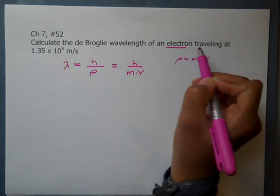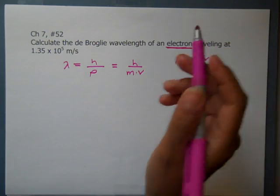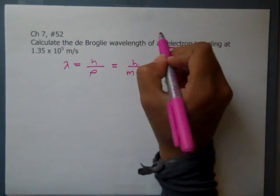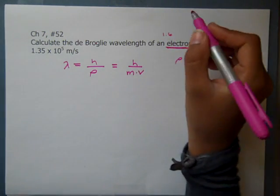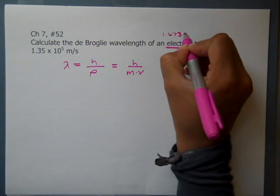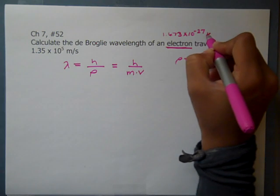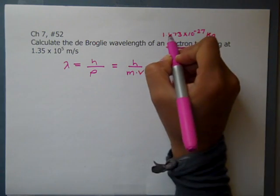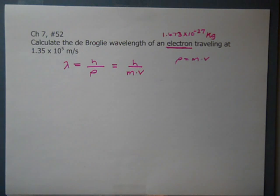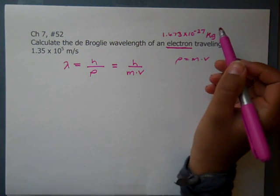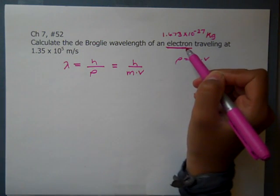Now remember, we have an electron, so the mass we know is a constant, and the mass of an electron is 1.673 times 10 to the negative 27 kilograms. This will be on your formula sheet, or it's in the book, or you look it up. Make sure you realize that you always have the mass of an electron.